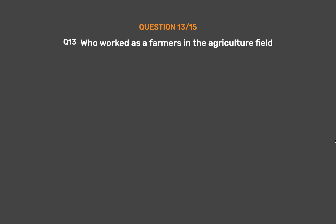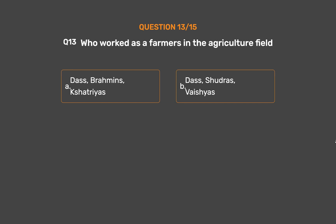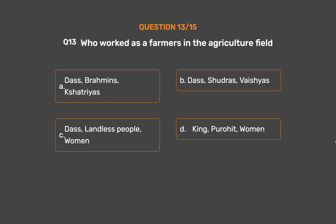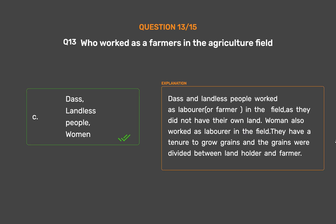Question No. 13. Who worked as a farmer in the agriculture field? Option A: Brahmins and Kshatriyas. Option B: Shudras and Vaishyas. Option C: Das, landless people, and women. The correct answer is Option C: Das, landless people, and women. Das and landless people worked as laborers or farmers in the field as they did not have their own land. Women also worked as laborers in the field. They had a tenure to grow grains, and the grains were divided between the landholder and the farmer.